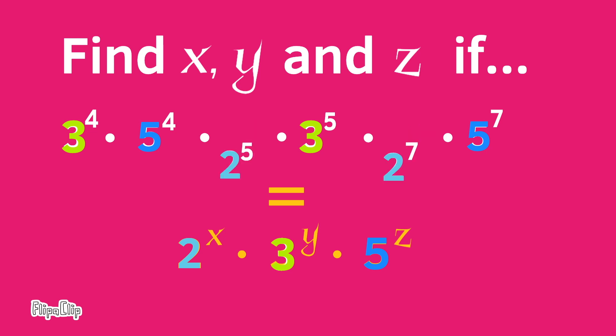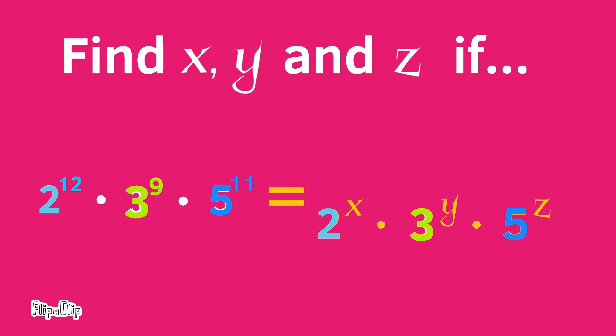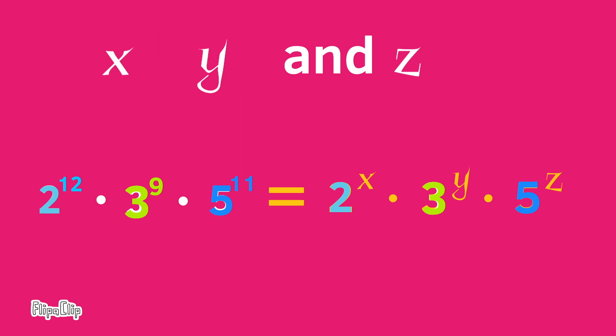2^5 × 2^7 = 2^12. 3^4 × 3^5 = 3^9. 5^4 × 5^7 = 5^11. In this case, the value for x is 12, the value for y is 9, and the value for z is 11.